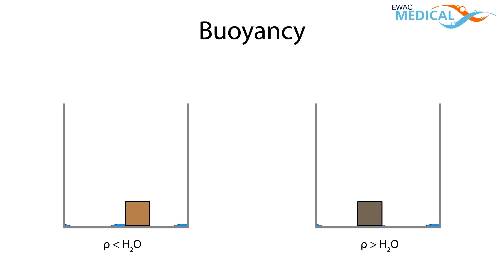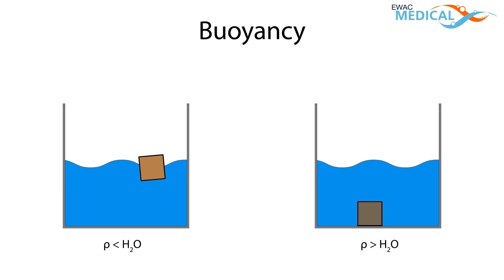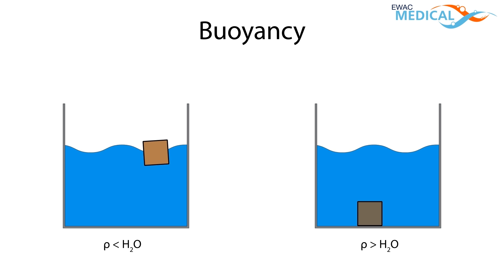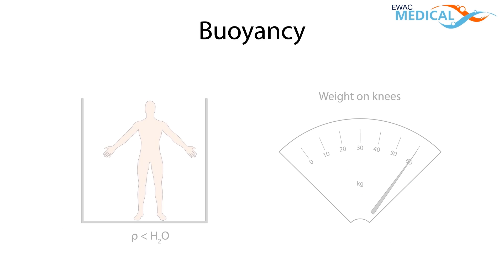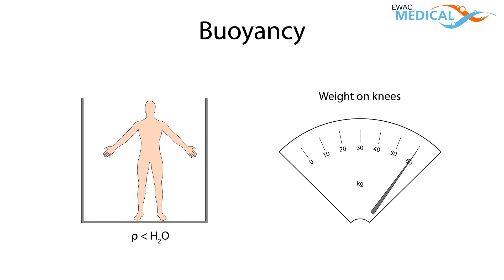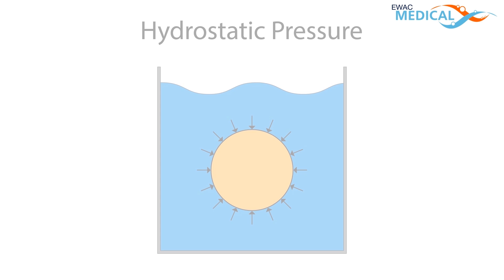Buoyancy. If the density of an object is lower than the density of water, it will float. If it is higher, it will sink. The human body tends to float. When a person is submerged in water, the amount of weight that is carried by the legs and the spine is reduced tremendously.